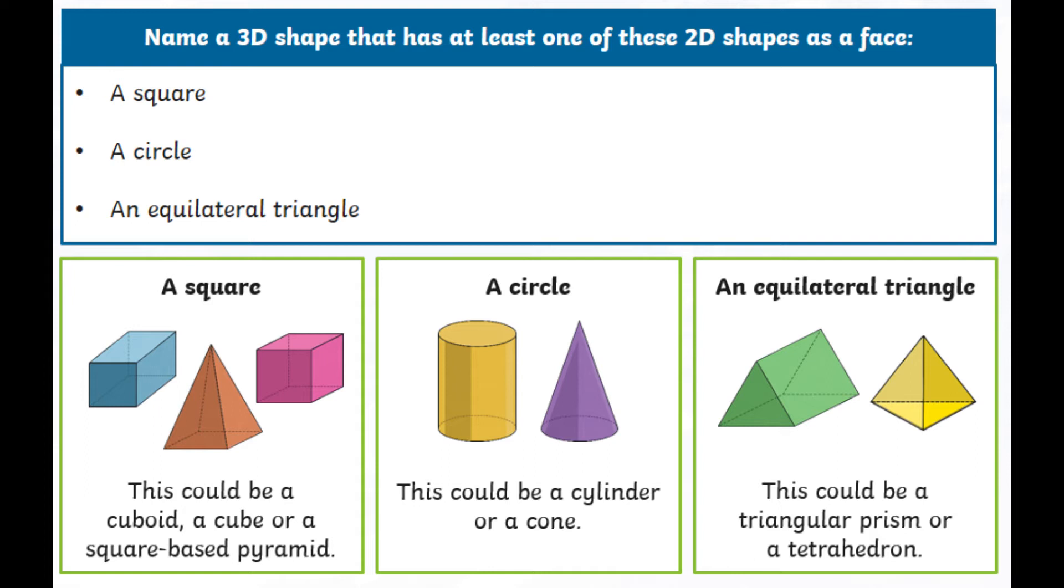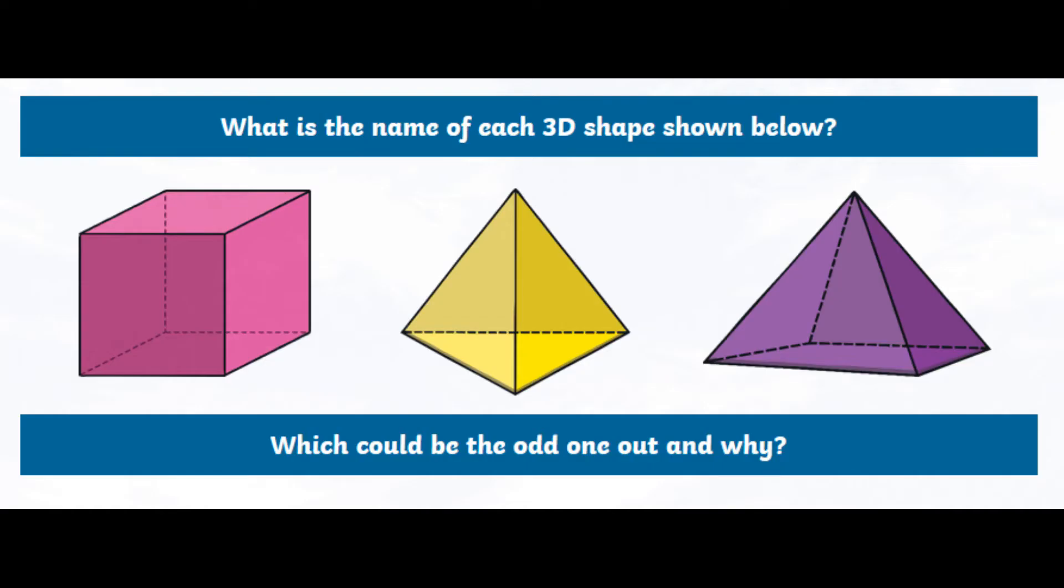Moving on. So this time, what is the name of each 3D shape shown below? I've mentioned a couple of them, or all of them, already. So this is a good way of checking if you have been listening and picking up this vocabulary. So what is the name of each of the 3D shapes, and which could be the odd one out, and why? So have a go without looking at the poster first. And if you're stuck, go back to the poster. Pause, take as long as you need, and then come back to this bit and see if you agree with the same as I have got.